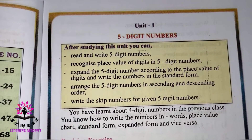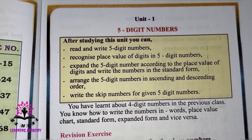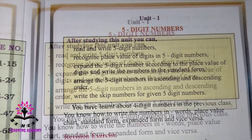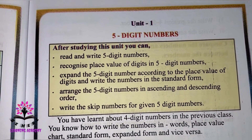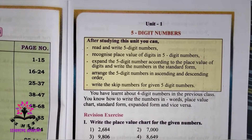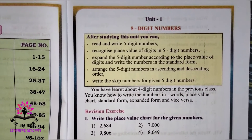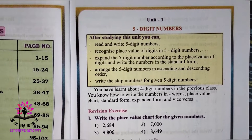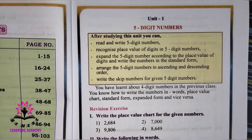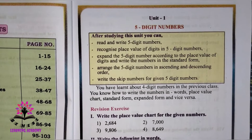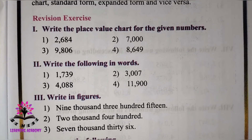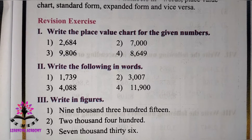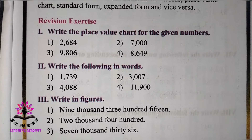Hello students, today we are going to study the new chapter: five-digit numbers, unit one, from your class five mathematics textbook. In this chapter you're going to study about five-digit numbers — recognizing the place value, expanding them, and arranging five-digit numbers in ascending and descending order. Now let us revise what we have learned in fourth standard.